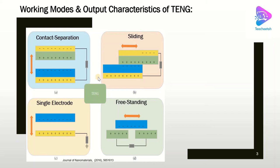Each mode has different applications and advantages. Remember, to make a TNG, at least one of the materials should be an insulator to keep the charge on the surfaces.